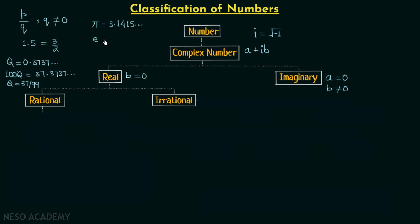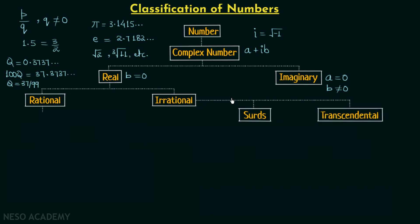Similarly, Euler's number e equals 2.7182... — again non-terminating and non-repeating, so it is also irrational. Other examples include the square root of 2 and the cube root of 11, where we cannot simplify them to remove the root and write them in p over q form. Numbers like root 2 and cube root of 11 we call surds, and numbers like pi and e we call transcendental numbers. So irrational numbers are classified into surds and transcendental numbers.